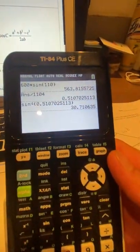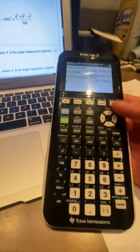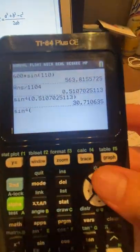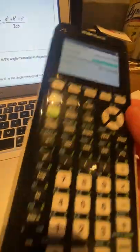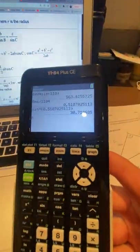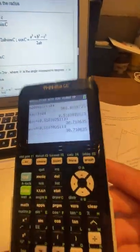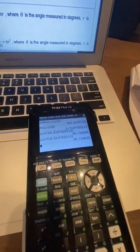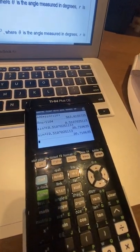In order to get the inverse sine, we're going to go second, and then we're going to go sine. That's going to give us the inverse sine, and then we just put the value that we got. And the answer is the size of angle ACB is 30.7 degrees.